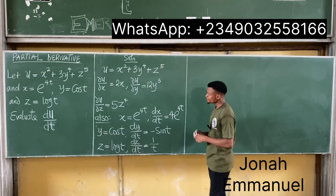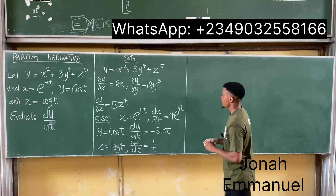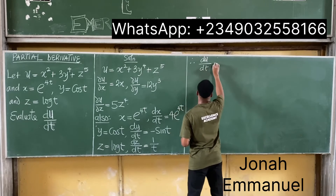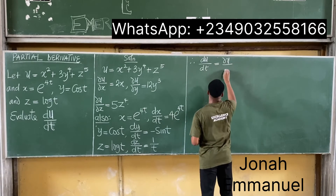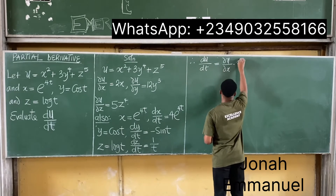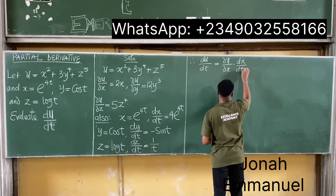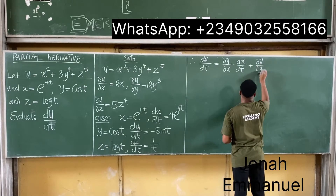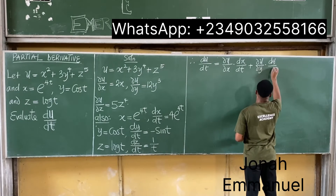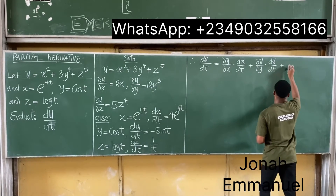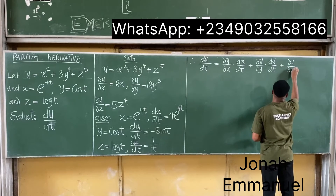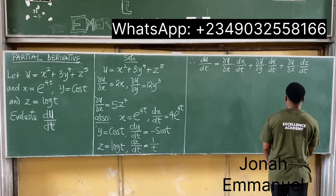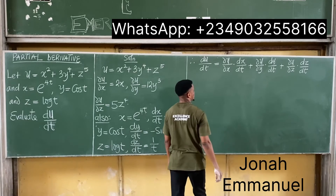From here we can now write: total du/dt equals partial u over partial x times dx/dt, plus partial u over partial y times dy/dt, plus partial u over partial z times dz/dt.